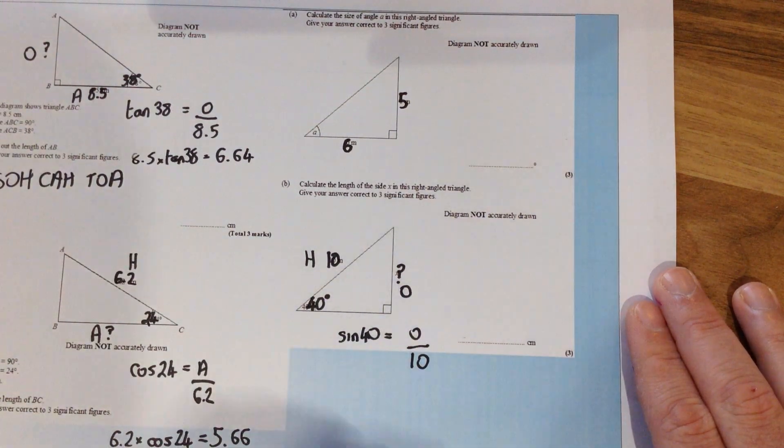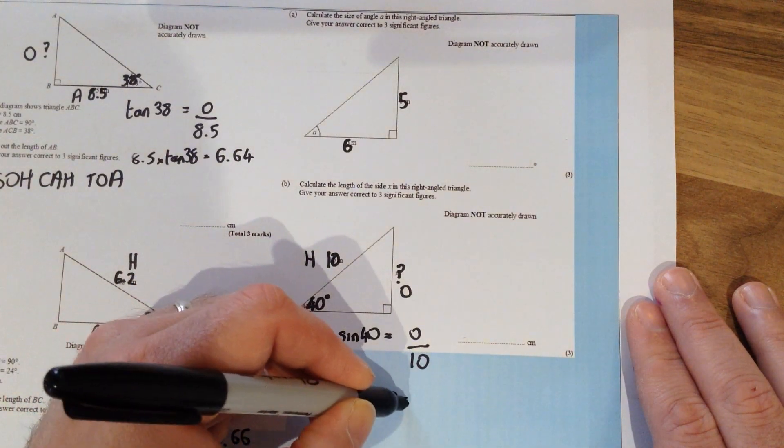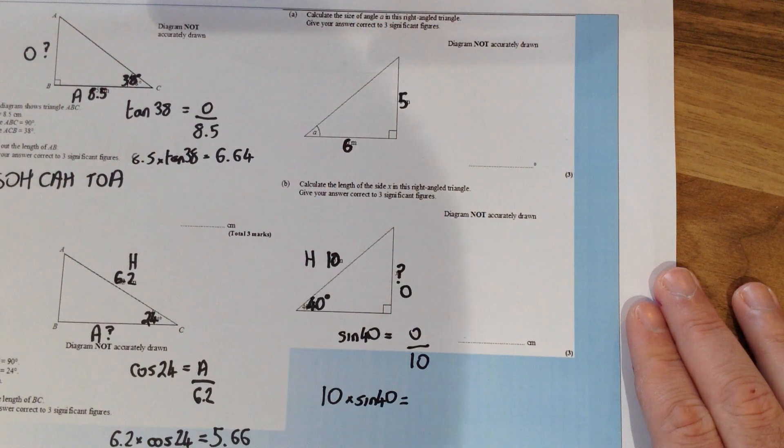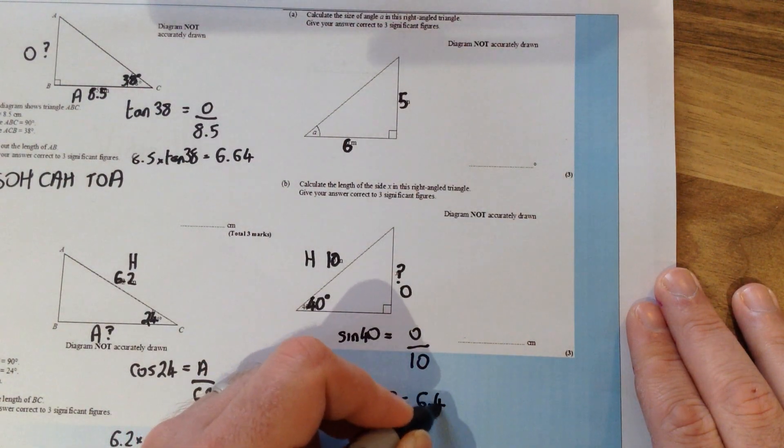Rearranging this just slightly we get that 10 times sin 40 that will give us our opposite side and 10 times sin 40 gives us an answer of 6.43.